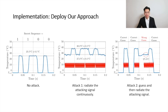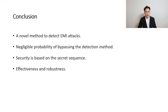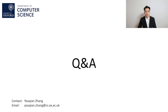All these graphs in the implementation are just examples; the real sampling period may consist of more samples, maybe 128 or 256. In conclusion, we propose a novel method to detect EMI attacks for sensor systems that match our model. A sensor system turns off the sensor to monitor the attacking signal in the sensor output. We proved that our detection method can be bypassed with only a negligible probability, based on the secret sequence being unknown to the attacker. Our implementations show that the detection method is effective and robust in detecting the attacking signal. Thank you.